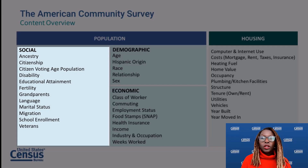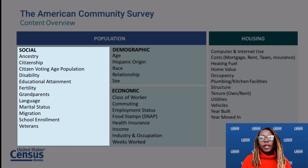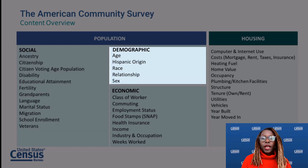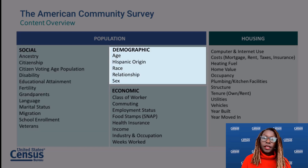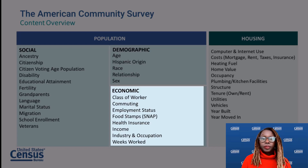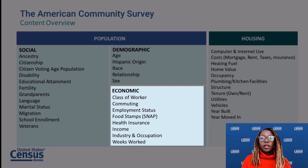Social characteristics include topics such as disability status, education, and language spoken at home. Demographic characteristics include topics such as sex, age, race, and Hispanic origin. Economic characteristics include topics such as commute to work, employment status, and income.